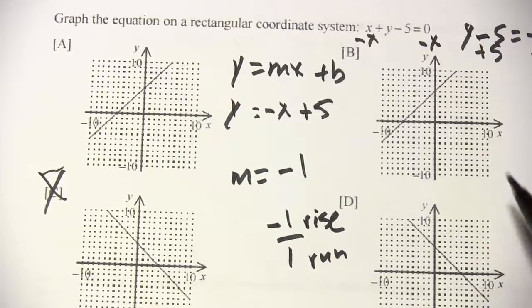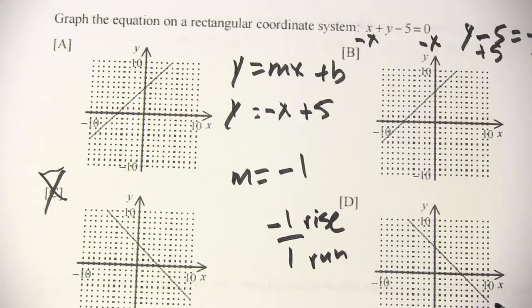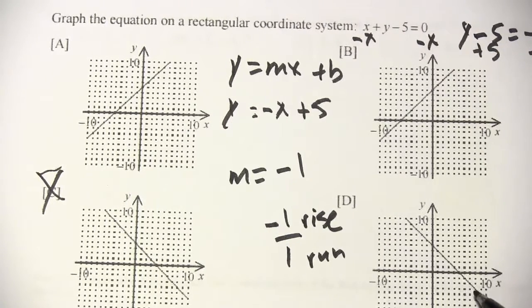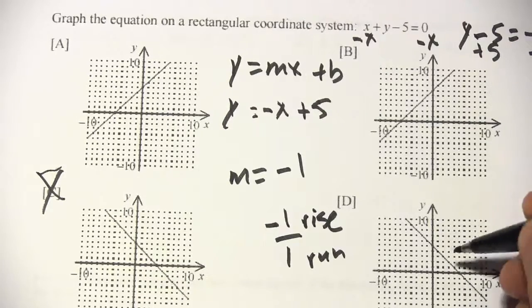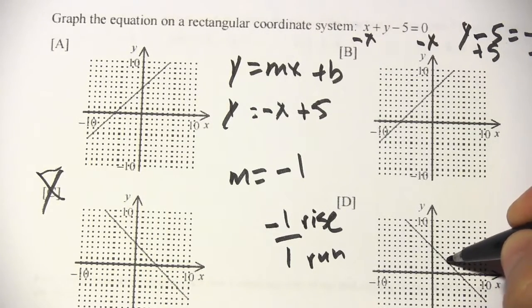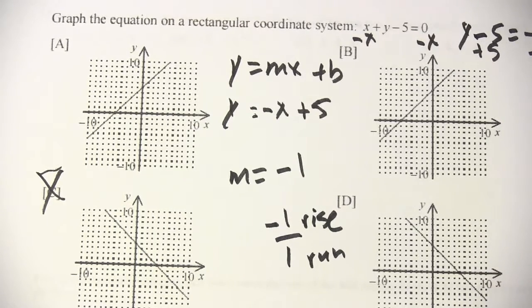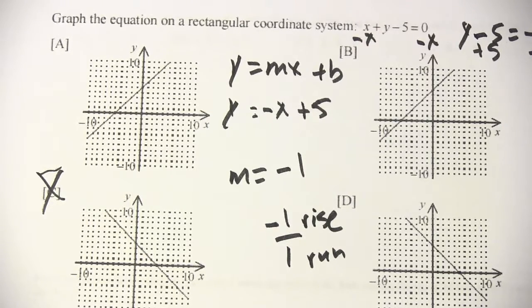The only line up here that's left that we haven't eliminated yet that goes down is this one. And remember, this is a negative slope, so it's going to slope down to the right. And if you wanted to verify, you could start here and count over 1, down 1, over 1, down 1, over 1, down 1, and you stay on the line every time. So that's a little bit of work with graphing using the slope-intercept method.